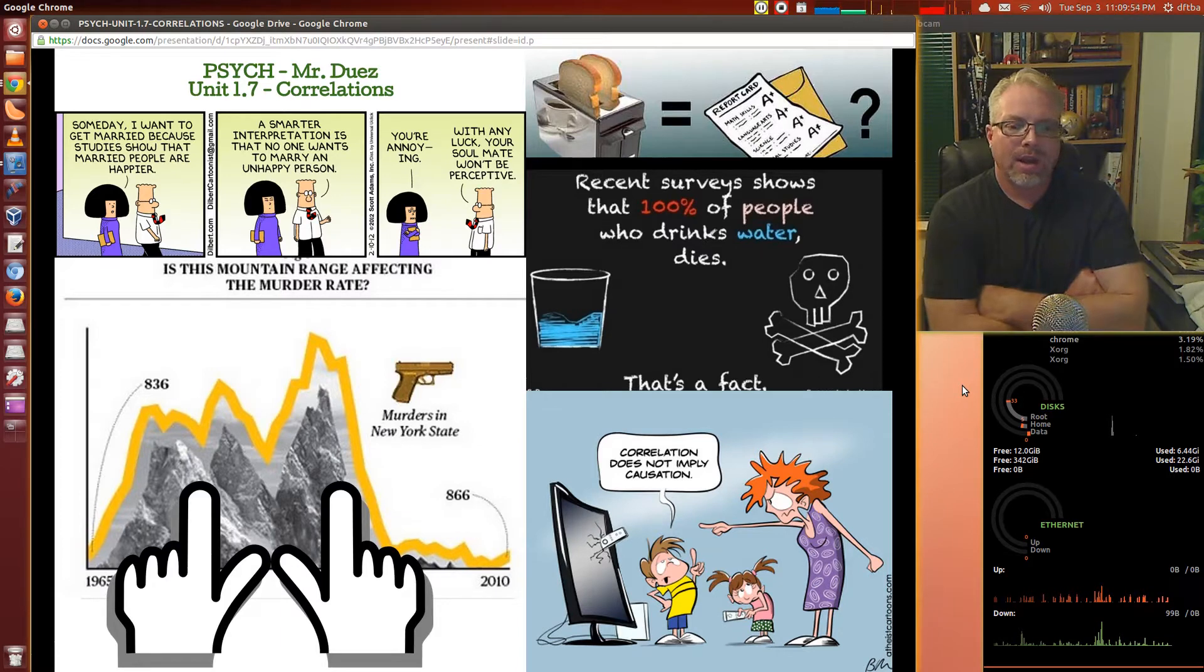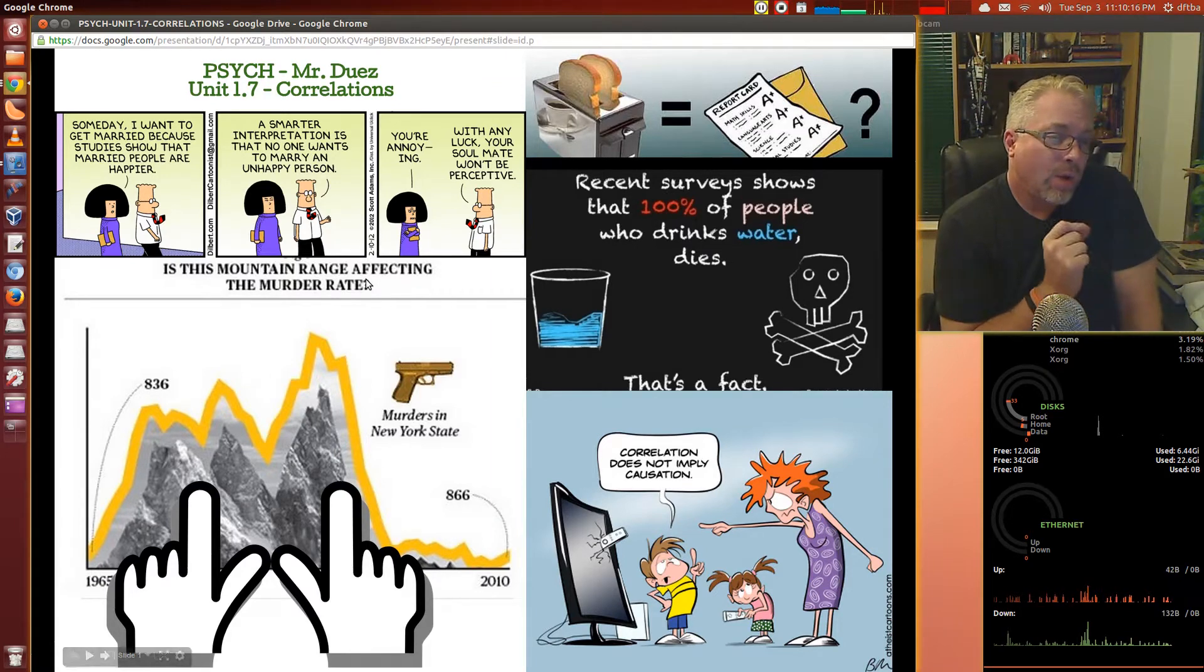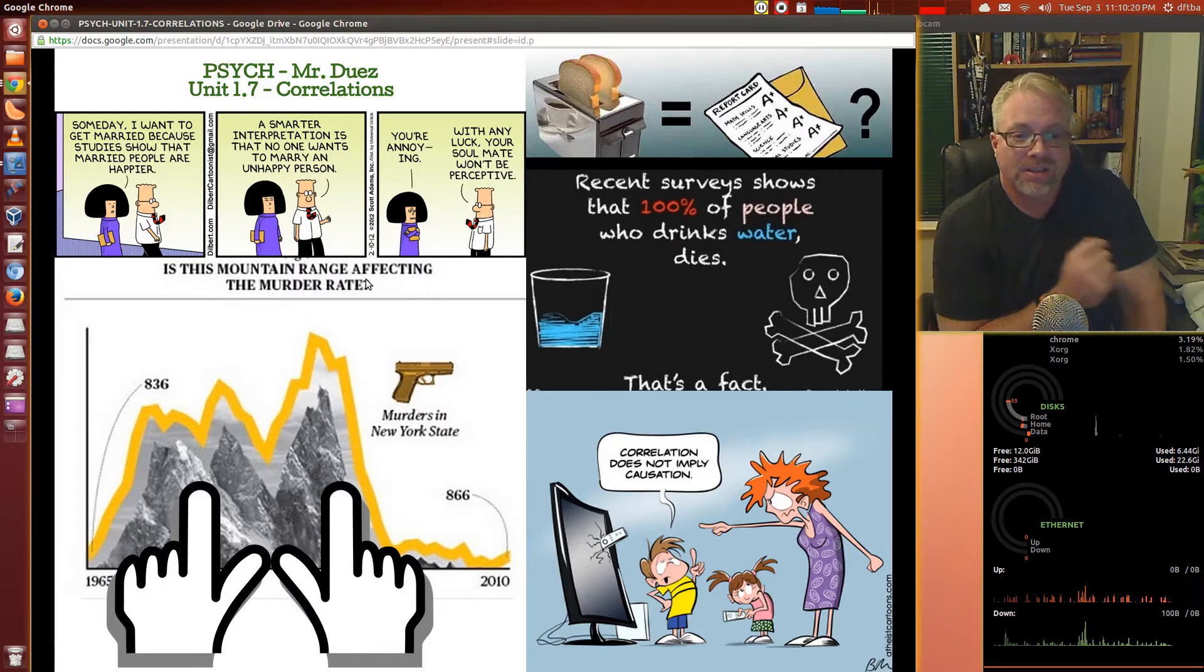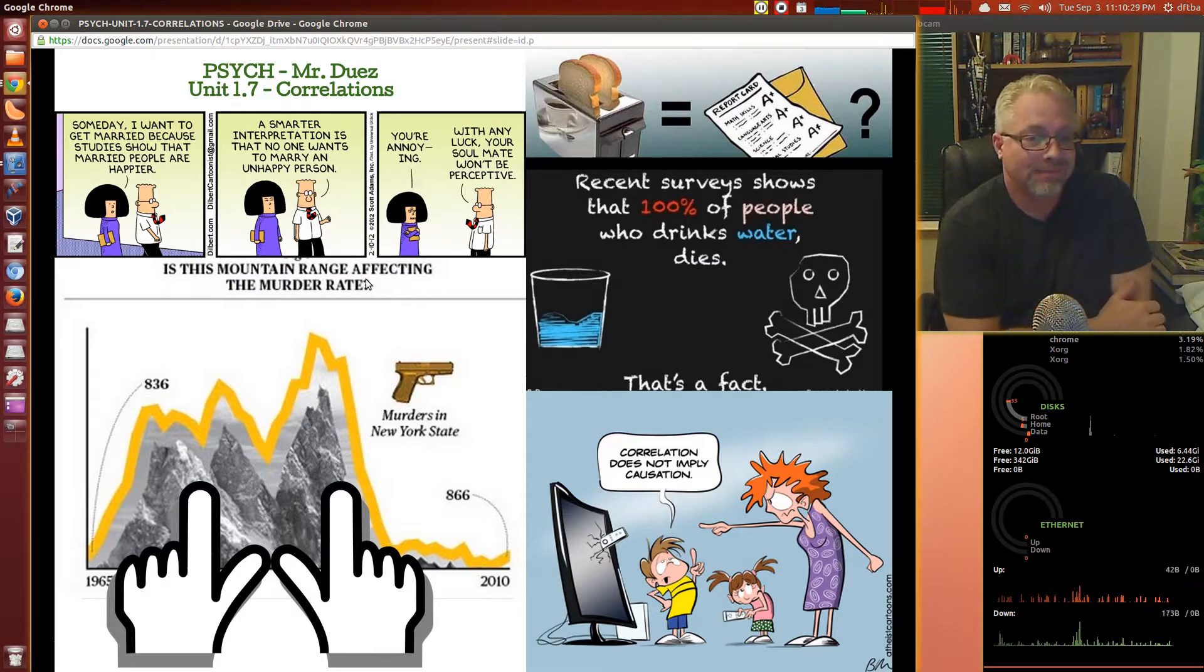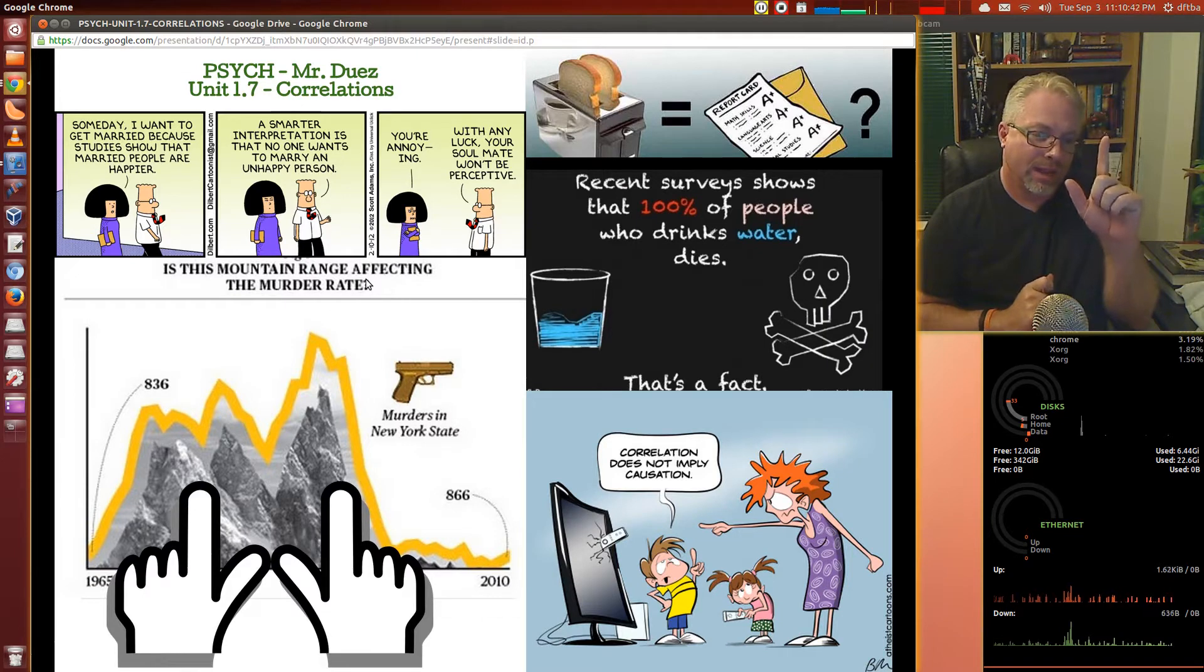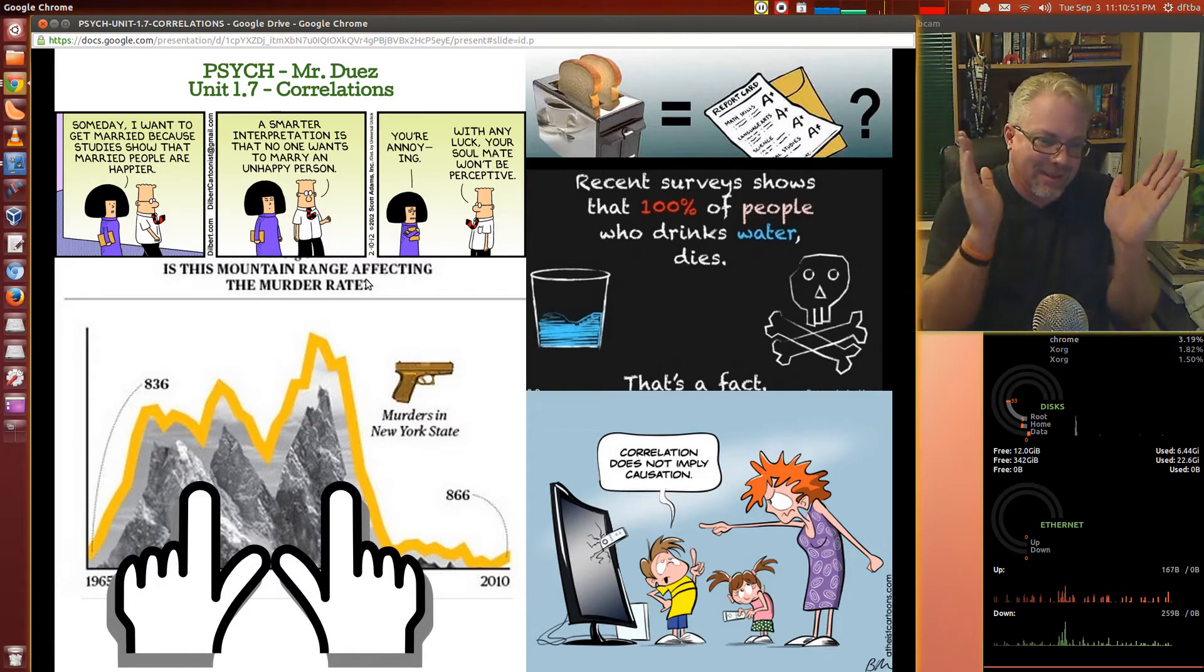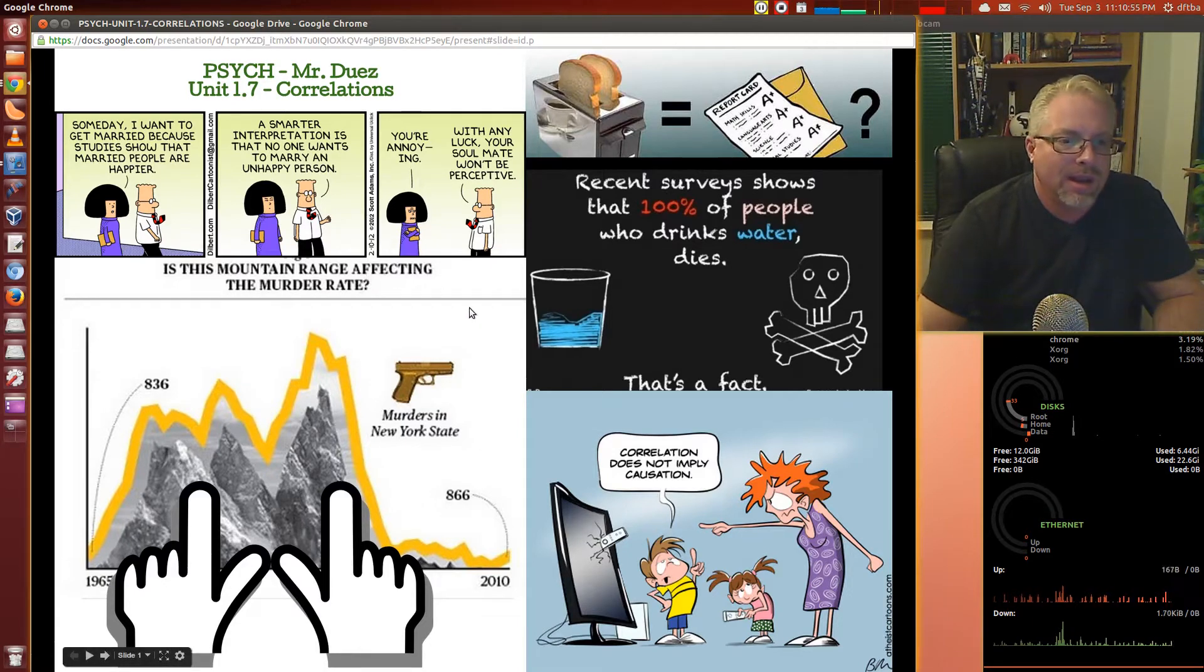Correlation does not imply causation, and that's something you may be able to use with your parents and the Wii remote. Another cartoon says, someday I want to get married because studies show that married people are happier. Dilbert says, a smarter interpretation is that no one wants to marry an unhappy person. The other picture here, we've got the two arrows, two fingers going up, because both murder rates in New York City and a mountain range look exactly the same. It's not related, it just happens to look like that. Correlation does not mean causation.